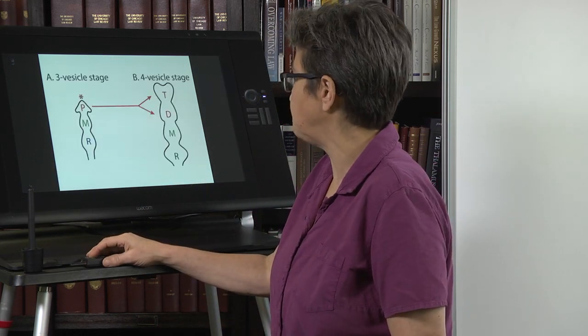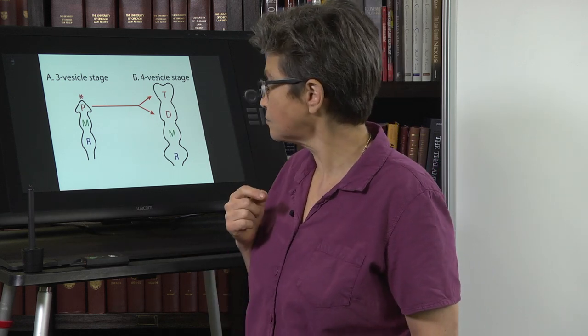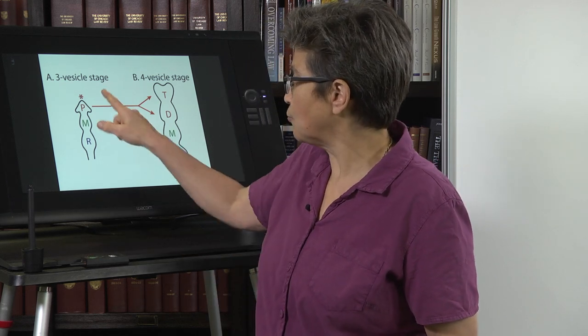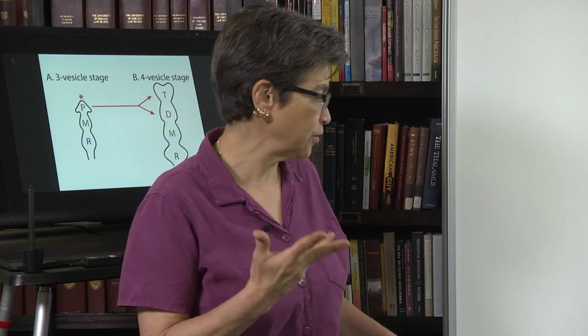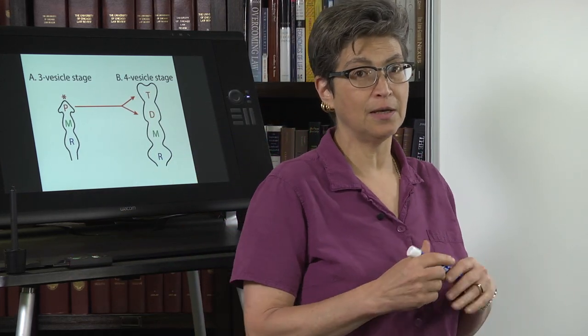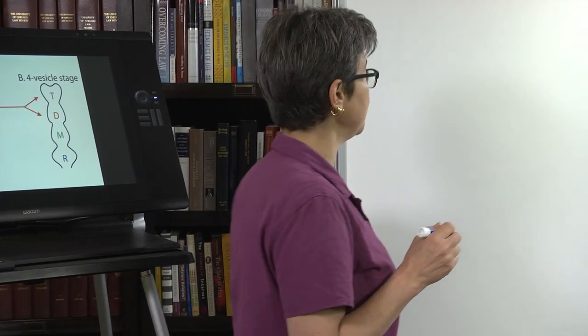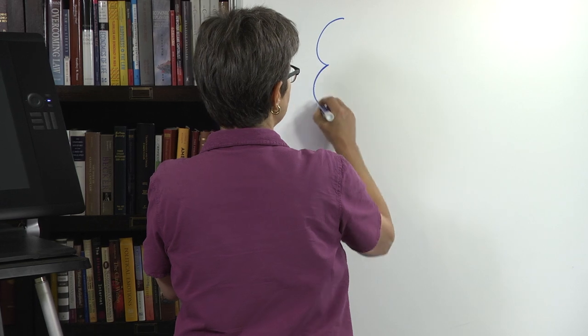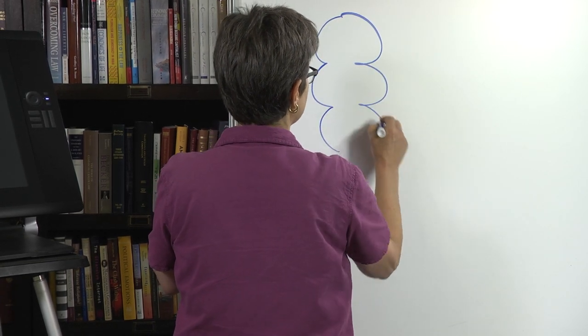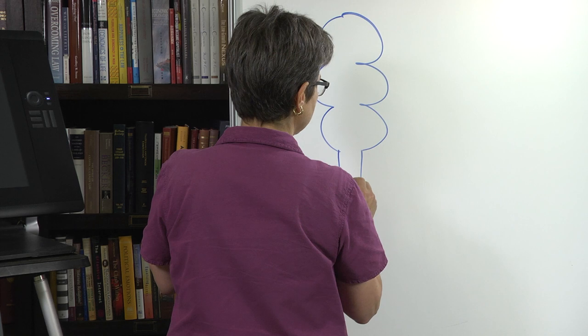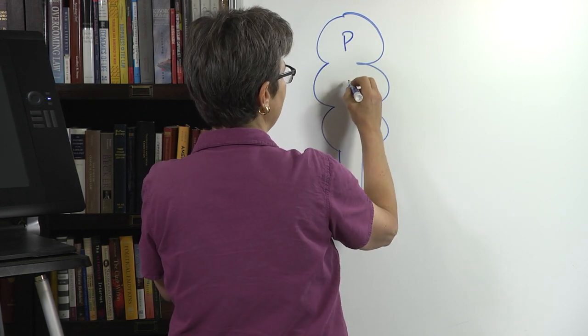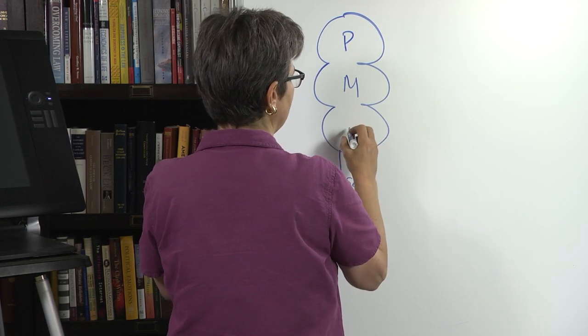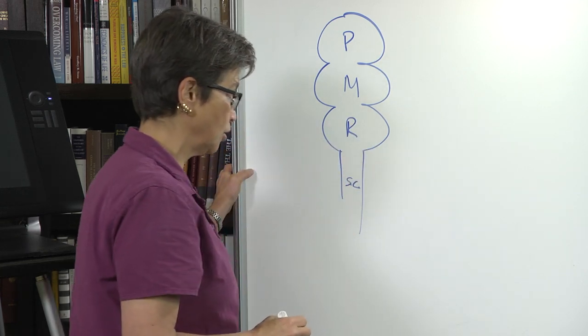Let's begin our journey here. We're going to go over to the board for the three vesicle stage. What I'm going to draw and what's on the slides is the same thing, but I believe this will help you see the process. What we have is three swellings and then the spinal cord. Here's the spinal cord, the frontmost swelling, the middle swelling, and the caudal swelling.